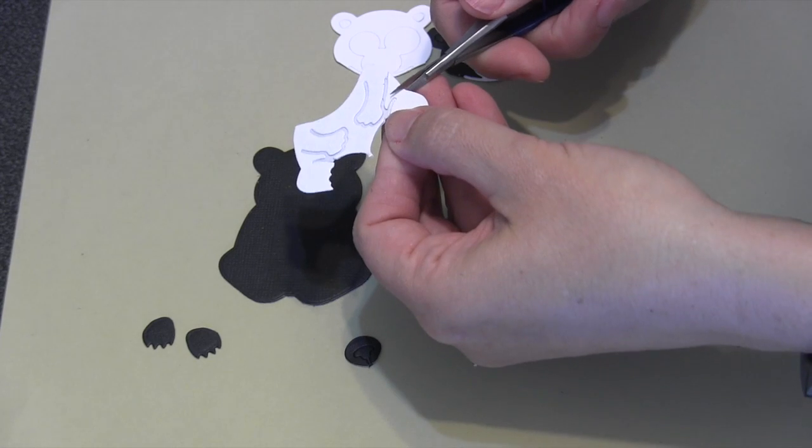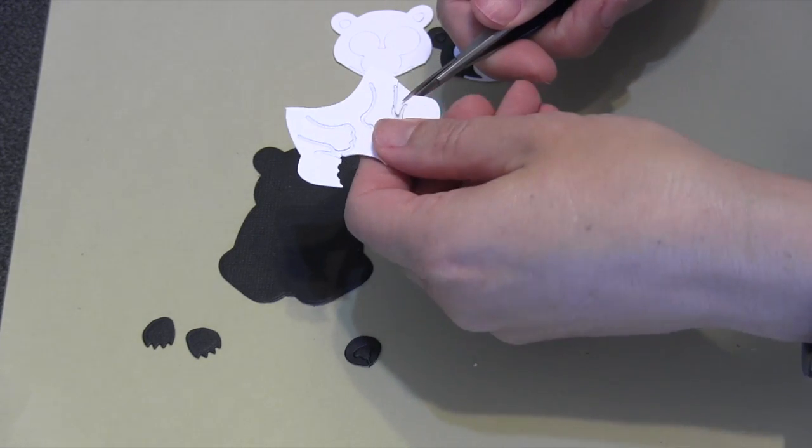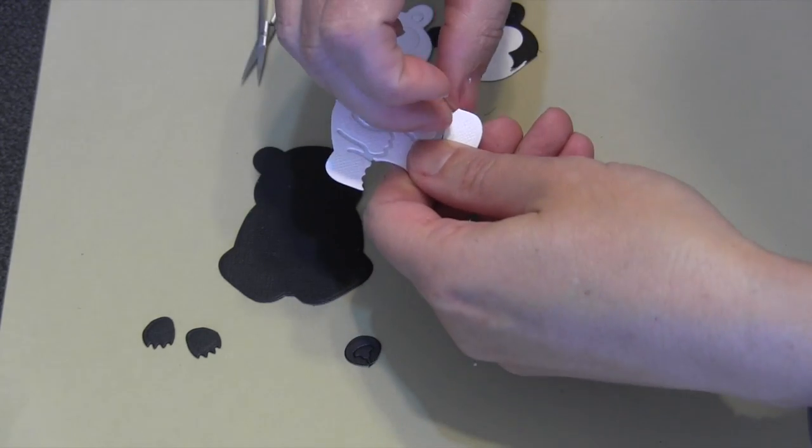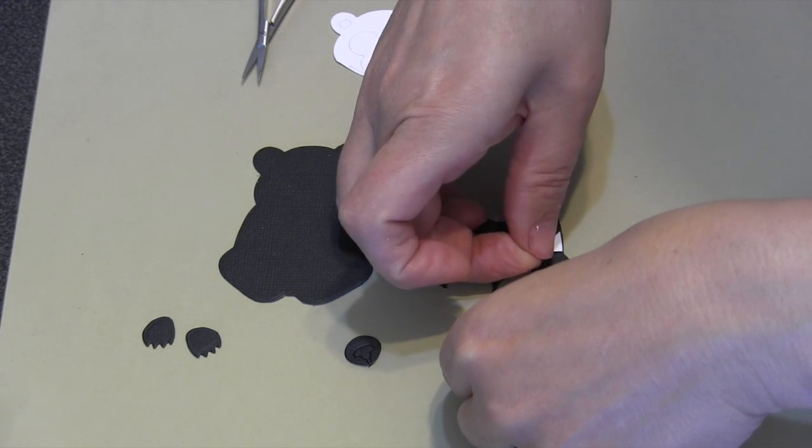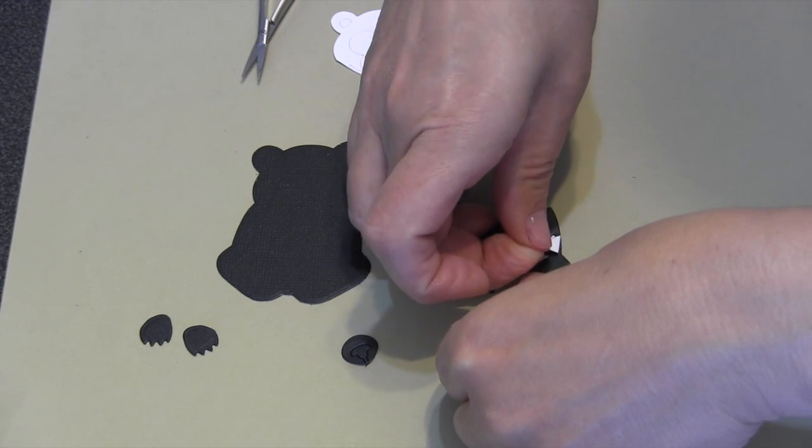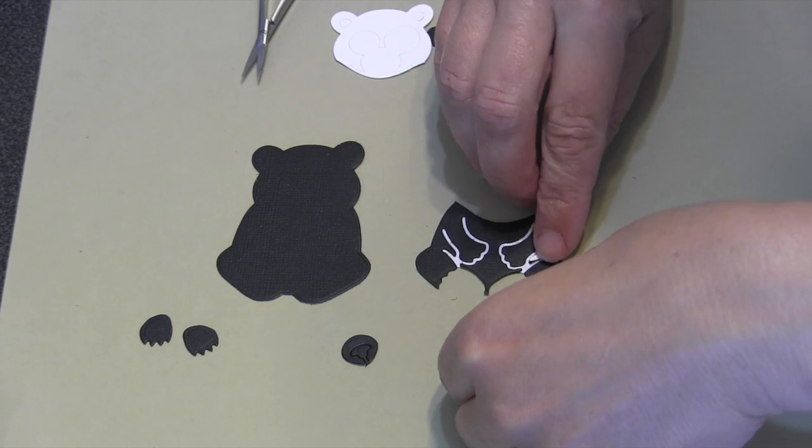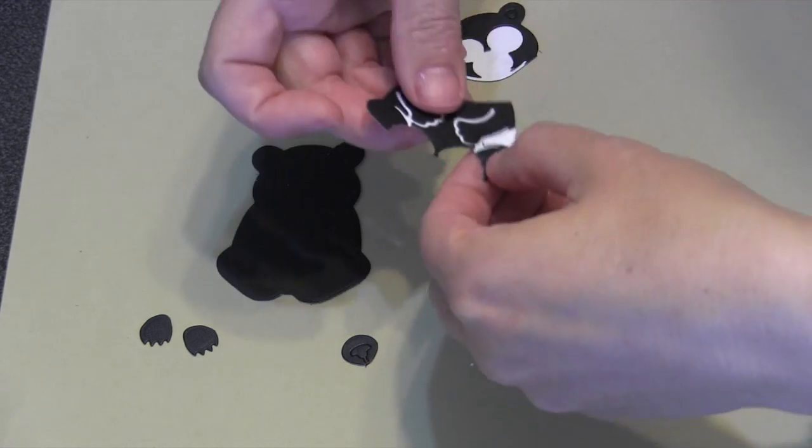I'm going to snip those two little locations there so that I get that little triangle out, and that triangle is then going to just attach to the black one. This is where the double-sided adhesive can be so helpful, because it's already a sticker.